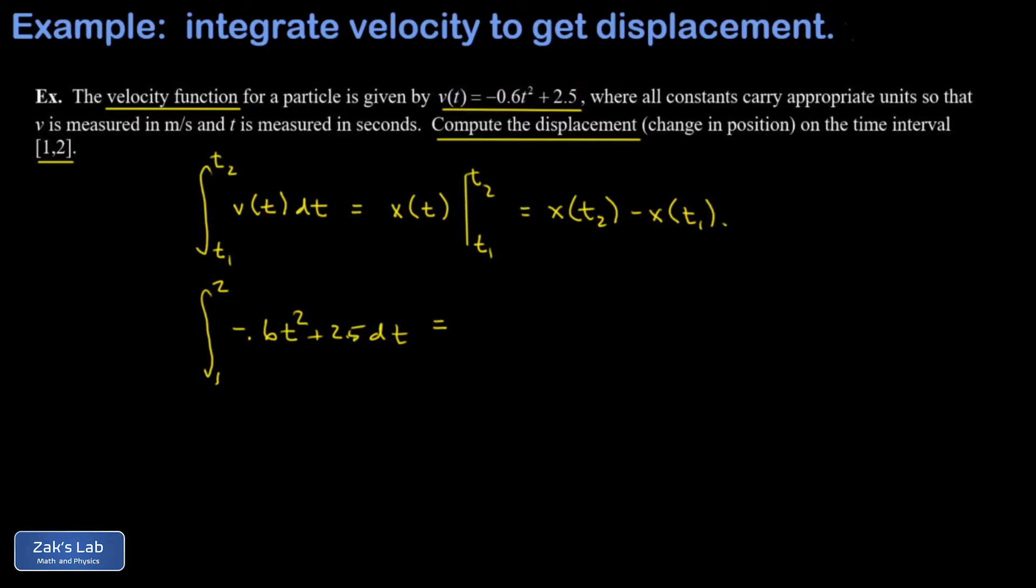We guess the anti-derivative here. The negative 0.6 is a spectator, and then t squared integrates to t cubed over three, and the 2.5 integrates to 2.5t. That's the thing I differentiate to get 2.5, and then I evaluate it from one to two.